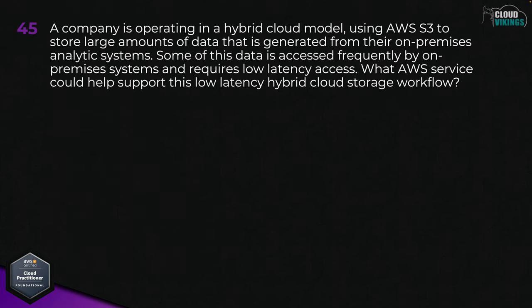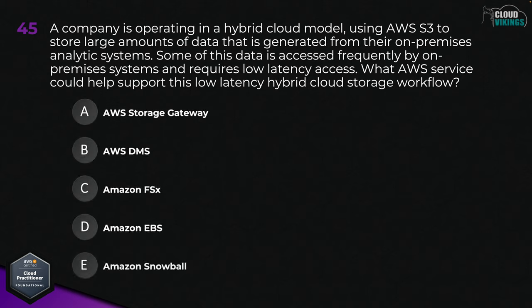Question forty-five: a company is operating in a hybrid cloud model using Amazon S3 to store large amounts of data generated from their on-premises analytic systems. Some of this data is accessed frequently by on-premises systems and requires low-latency access. Which AWS service could help support this low-latency hybrid cloud storage workflow? Options are: A, AWS Storage Gateway; B, AWS DMS; C, Amazon FSx; D, Amazon EBS; or E, Amazon Snowball. The best answer here would be A, AWS Storage Gateway.